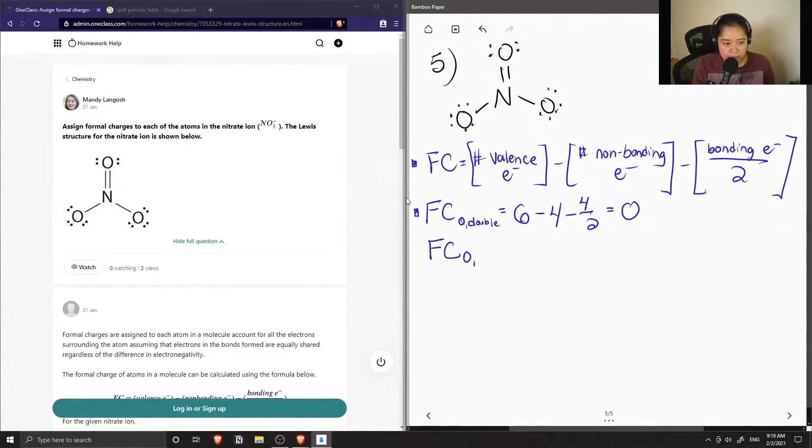Now let's calculate the formal charge of the single bonded oxygen. We have two of them in this structure. Again, oxygen has six valence electrons, but this time there are more lone pairs on the oxygen. We have six non-bonding electrons, and since there's a single bond, we have two bonding electrons divided by two. Both of our oxygen atoms will have a negative one formal charge, so I can show the charge on the two atoms like so.